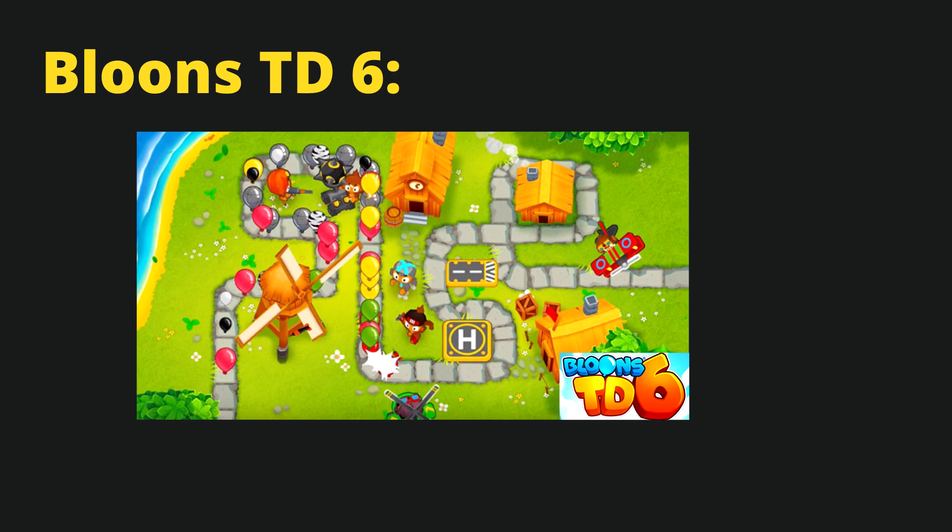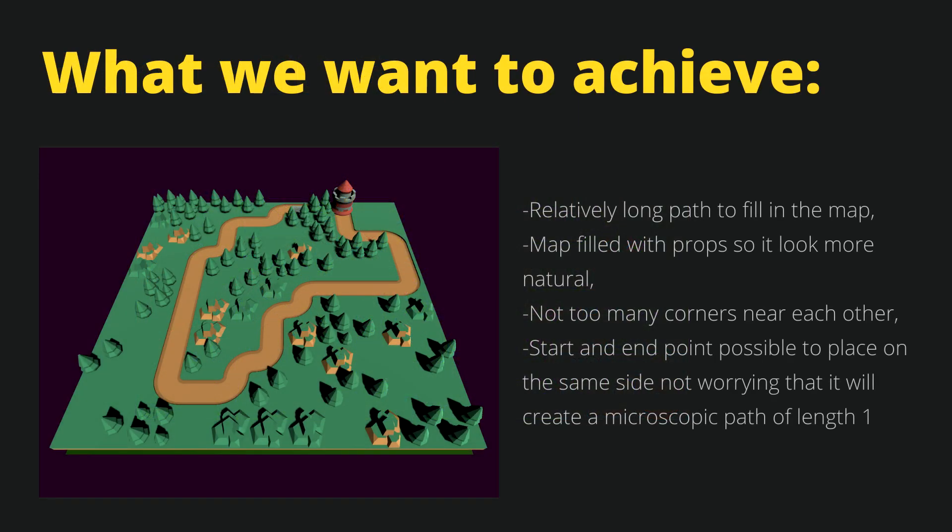The road itself can be complex or simple. It can contain two or more exits. For our simple example, we have decided that we have a start and an end point that we want to connect with a road. The road should go through the entire map, so the path should be relatively long. The map should be filled with props so it looks more natural.